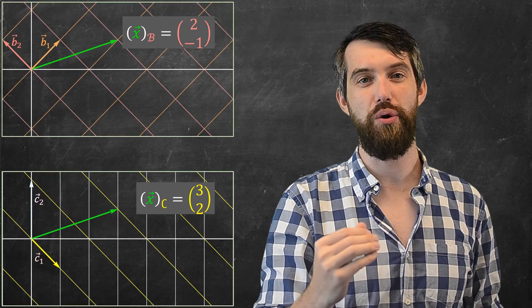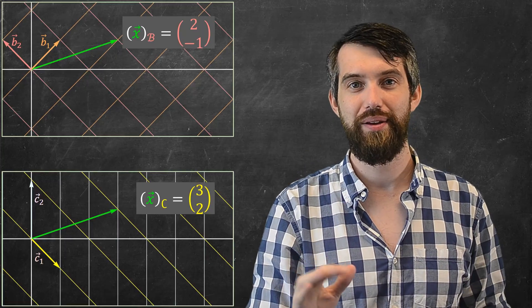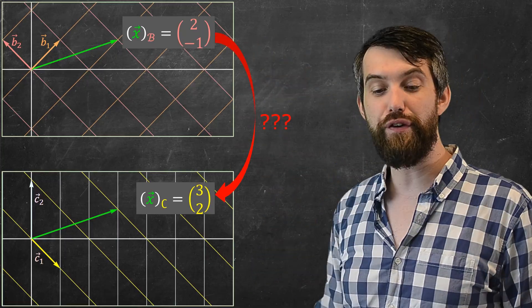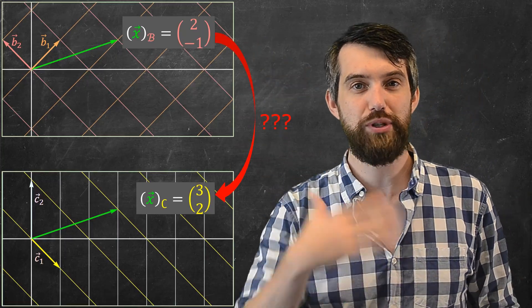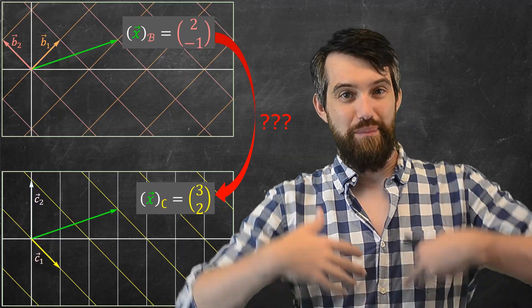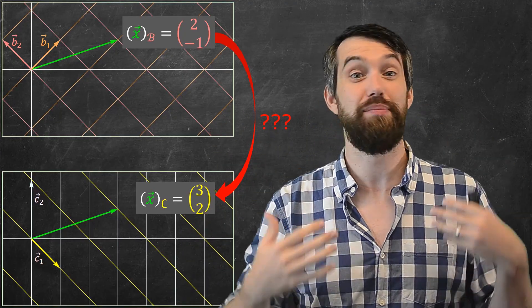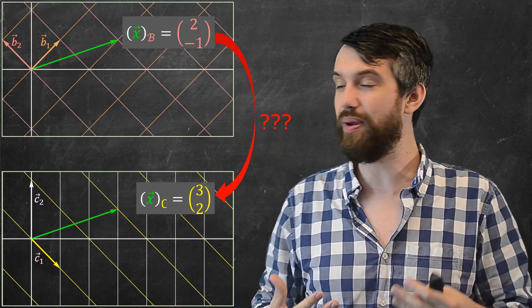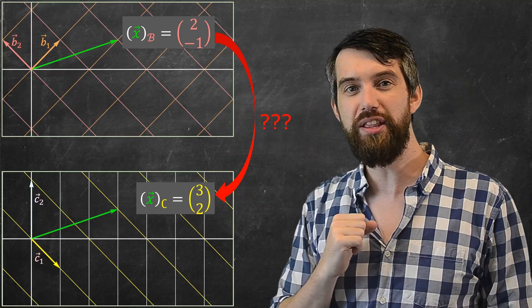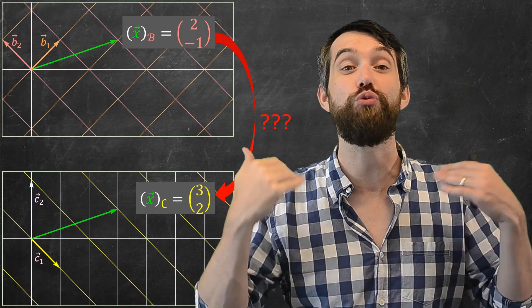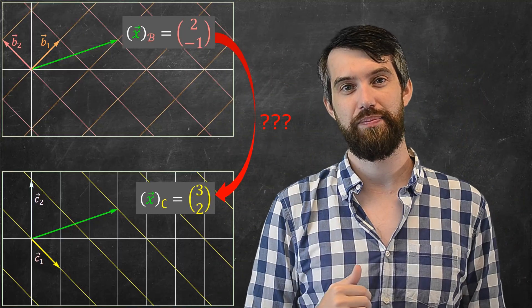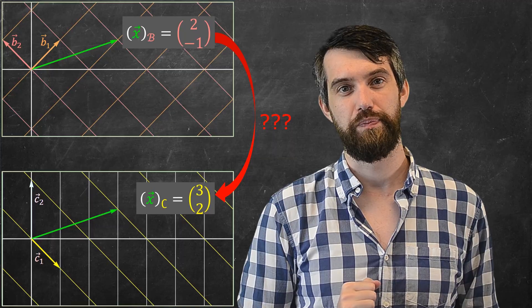The question for this video is: how do I make some sort of conversion between these two? Is there some matrix — some linear transformation — that allows me to take vectors written in the b basis and write them in the c basis? That's the goal for this video.